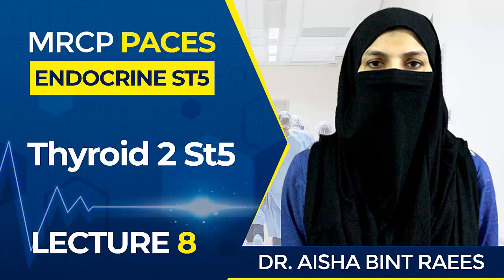It is also important to know the differential diagnoses for proptosis: number one is Graves disease, followed by cavernous sinus thrombosis, orbital cellulitis, retroorbital tumour or granuloma, and trauma. This was all about the clinical features of Graves disease.